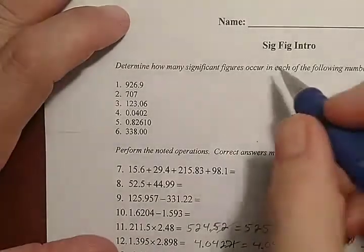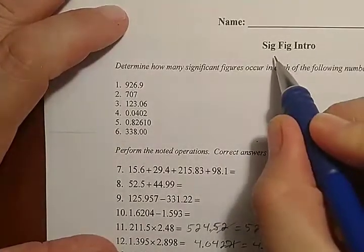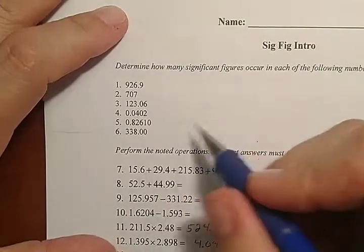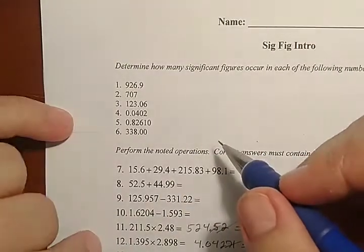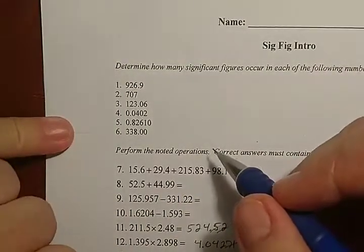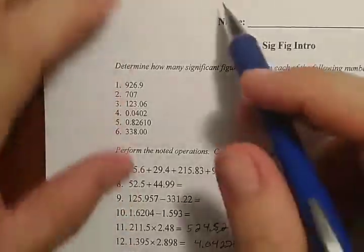Let's talk through significant figures. This means how many figures, how many digits, were actually measured. Now, sometimes zero was measured and sometimes it wasn't. And there is a bunch of rules.